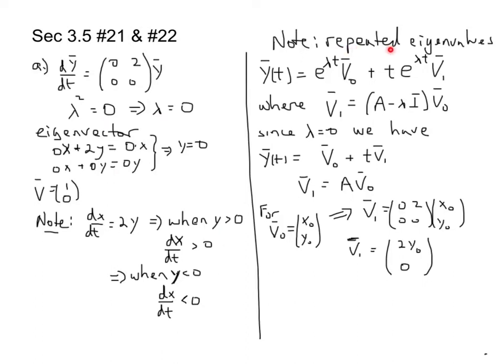When I see that we have repeated eigenvalues, this is our standard form of our solution. This is unlike our other forms with our constants k1 and k2.